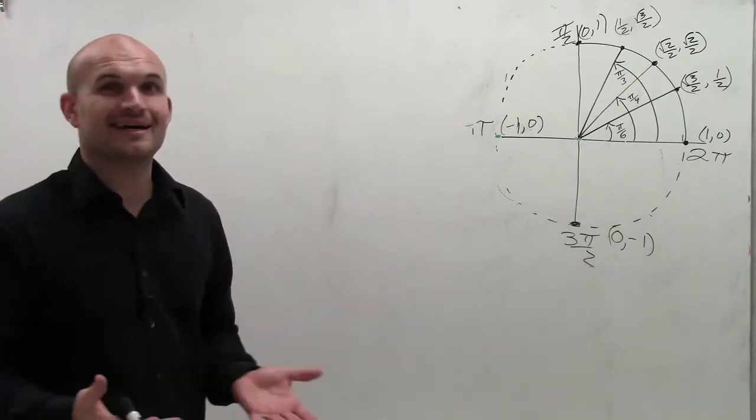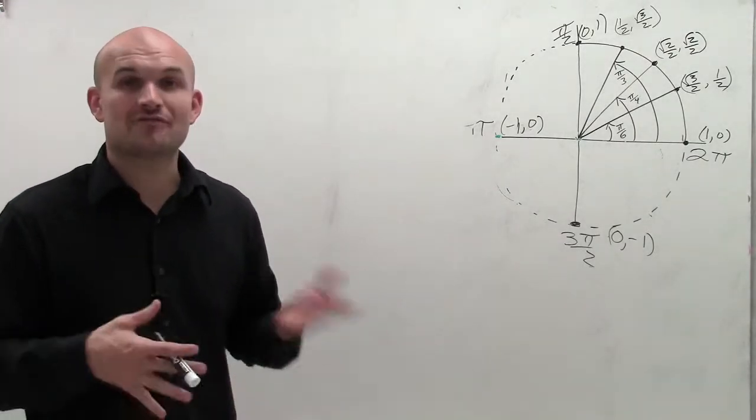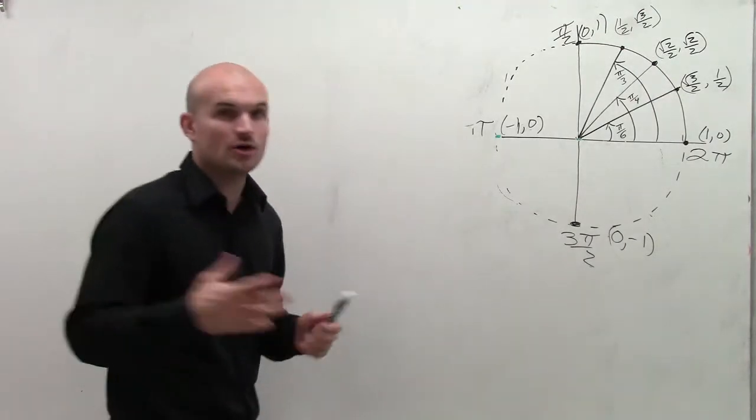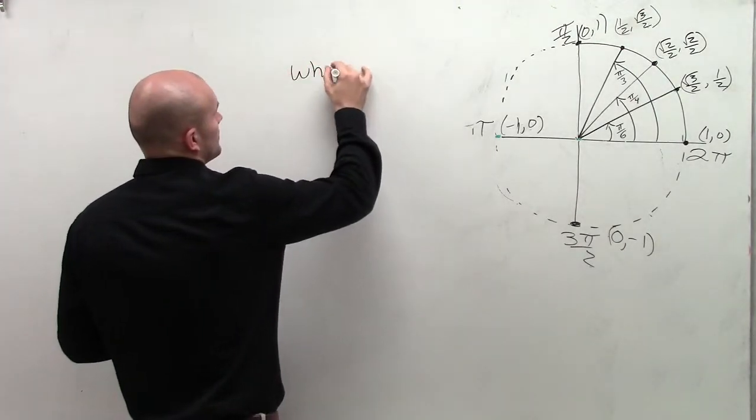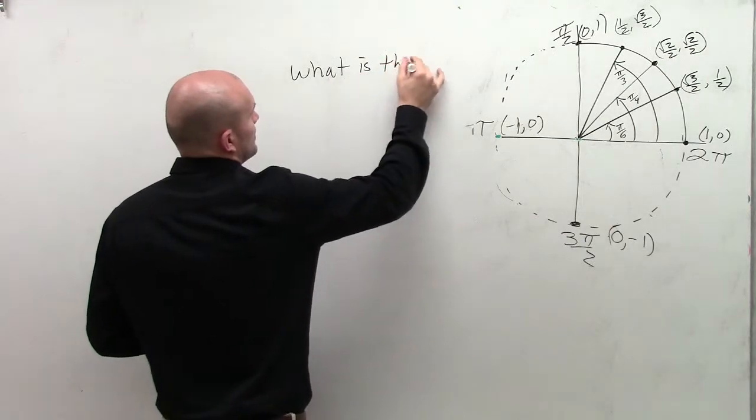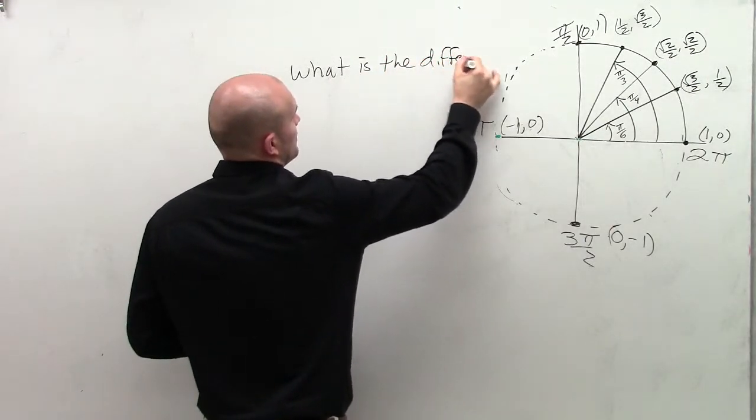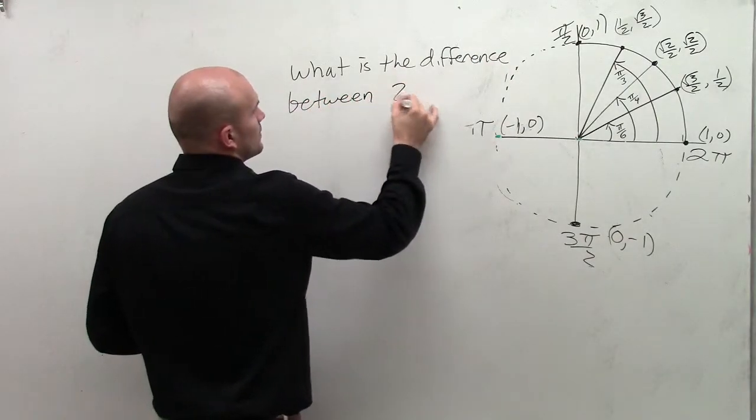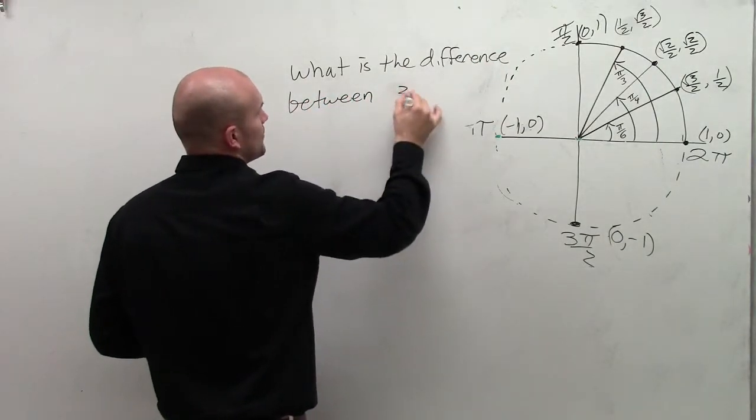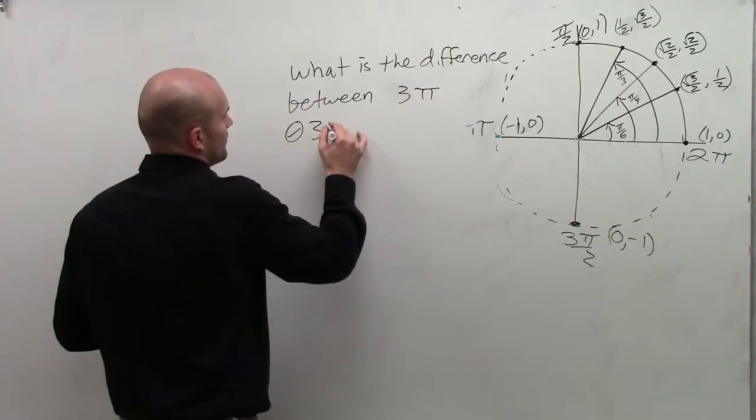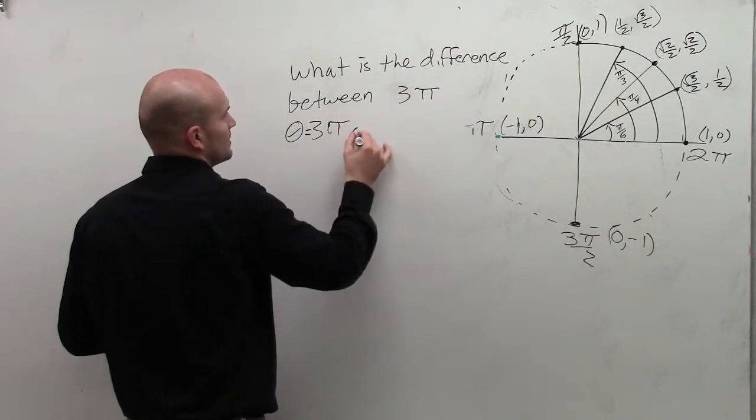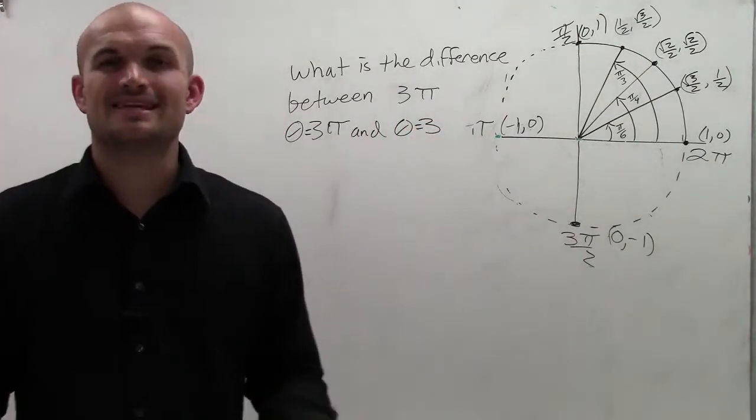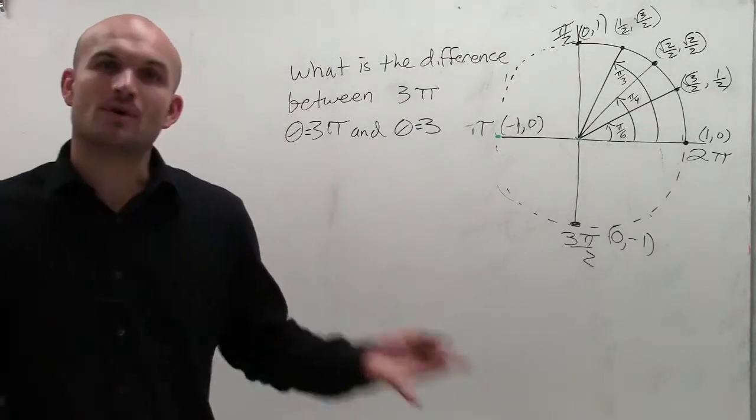So here we go. I don't really like my definition that I used before, so I want to go back to it. I want to let you know what is the difference between the angle 3π and the angle 3? So what's the difference in these? Because they're both in radians, but what's the difference?